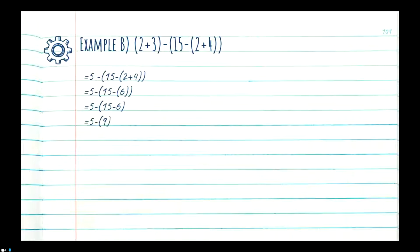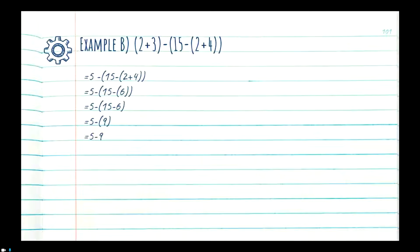A negative sign is essentially just a negative one, so we say negative one times 9. Then 5 minus 9 — we only have subtraction left, so we can go ahead and solve: 5 minus 9 is equal to negative 4, giving us a final answer of negative 4.